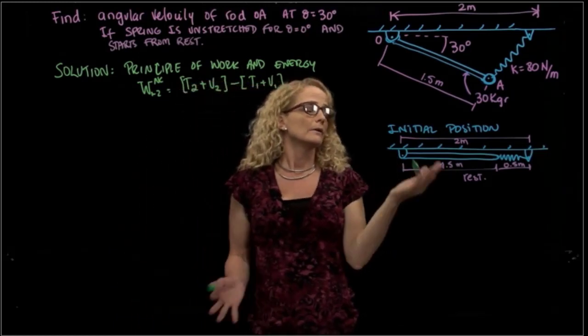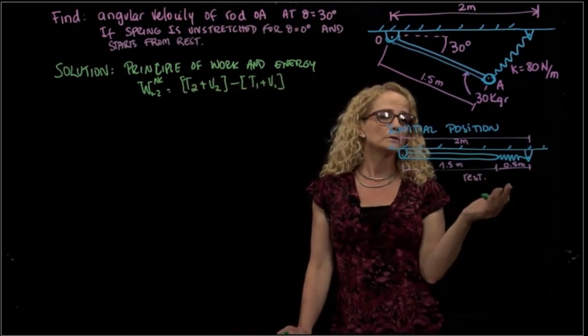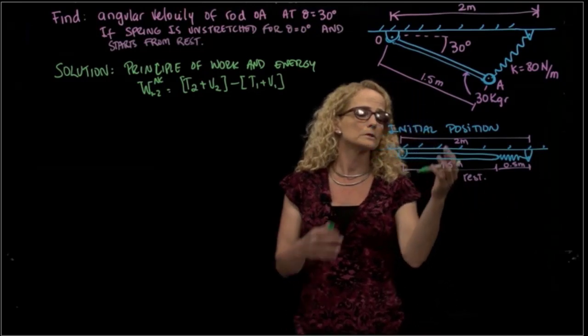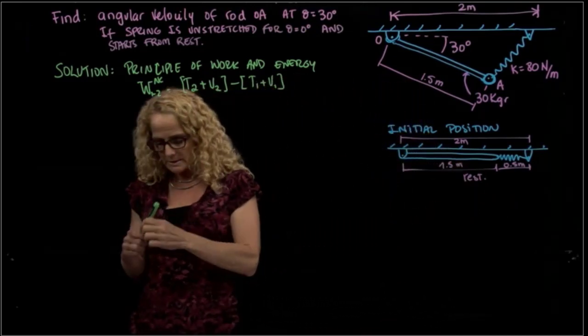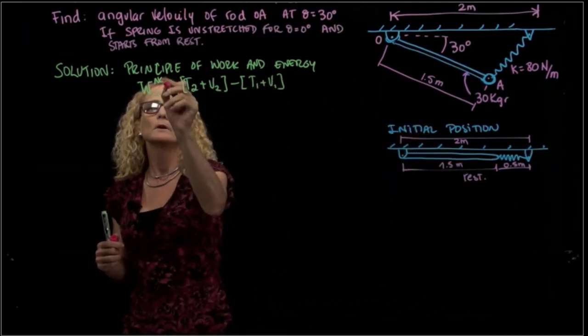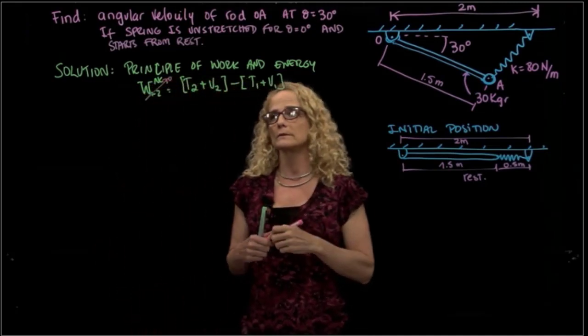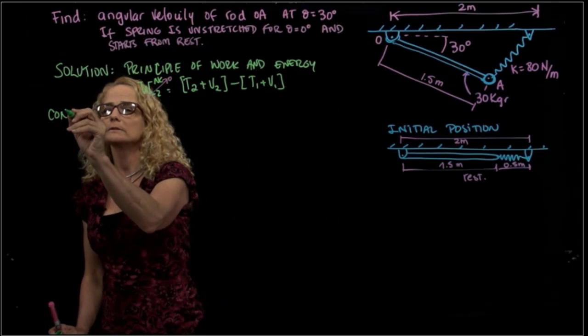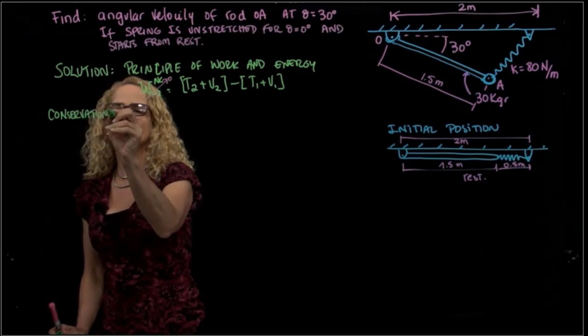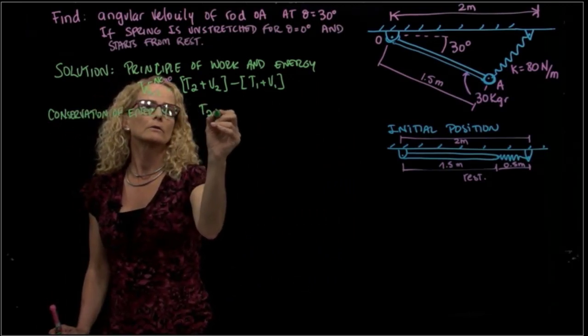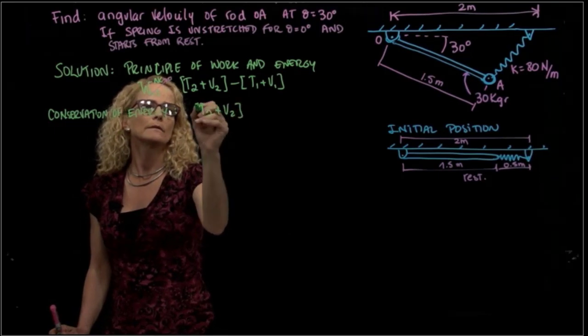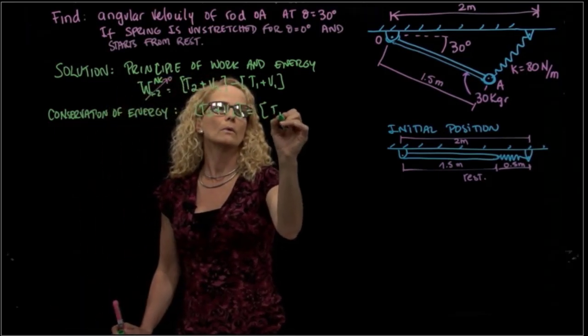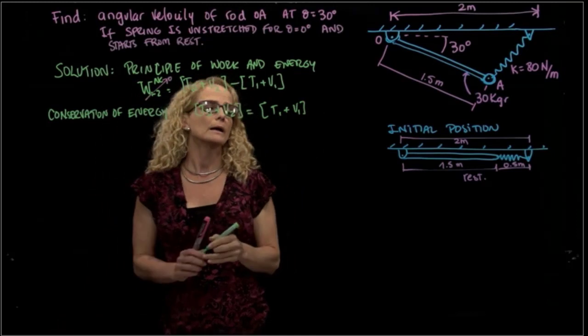Here we don't have any non-conservative forces. We don't have frictions anywhere. We don't have any other forces applied to the system. So we can say that the work for non-conservative forces is 0. So we actually have conservation of energy. We can say that T2 plus V2 equals T1 plus V1.